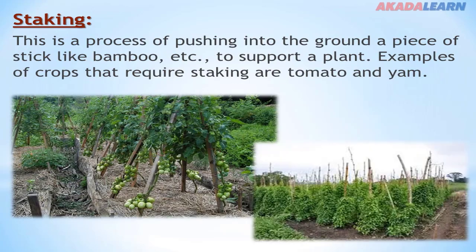Staking. Staking is a process of pushing into the ground a piece of stick-like material, such as bamboo, to support a plant. Examples of crops that require staking are tomato and yam.